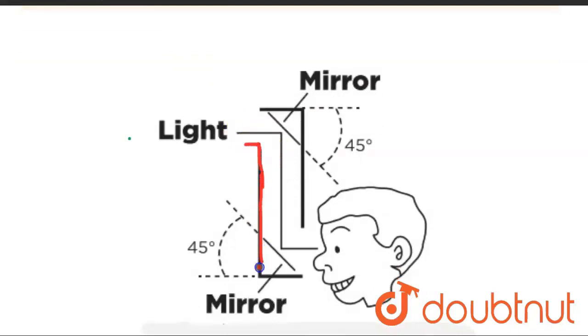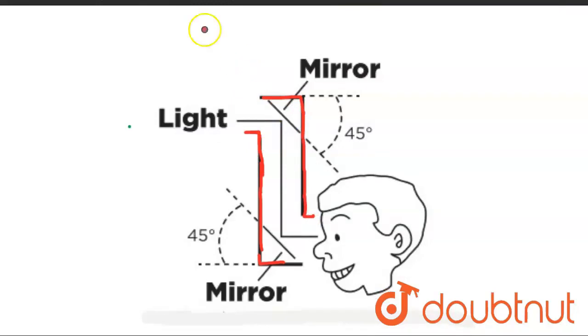This is bent at two ends like this. Two mirrors are fitted—one mirror here and another mirror here. They are fitted at a 45-degree angle.